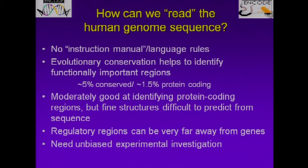As Eric was saying, way back in 2002 when we were anticipating the completion of the human genome sequence, we started to ask in earnest: how can we read the human genome sequence? There is no instruction manual. We really don't know the language rules for the human genome, and we know that evolutionary conservation can help identify functionally important regions. About 5% of the genome is conserved, about 1.5% is protein coding, and we were moderately good at finding protein coding regions, but the fine structures were difficult to predict just from the sequence alone.